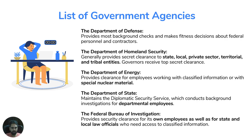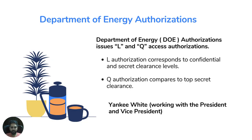The Department of State provides security clearance for departmental employees. The FBI provides security clearance to its employees as well as state employees and local law officials. The DoE also authorizes L and Q access: L authorization corresponds to Secret clearance, and Q authorization is equivalent to Top Secret clearance.